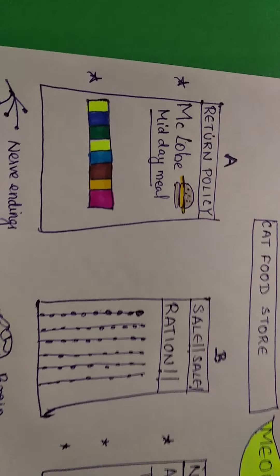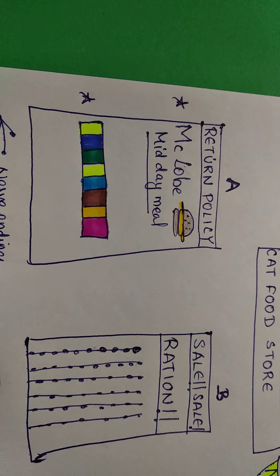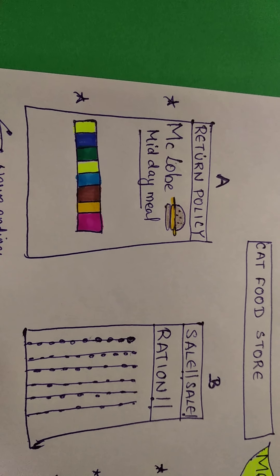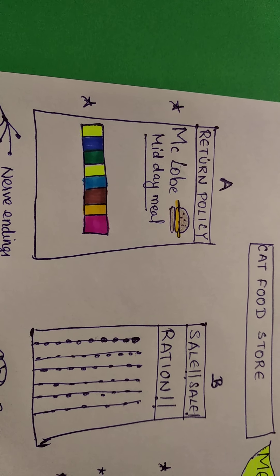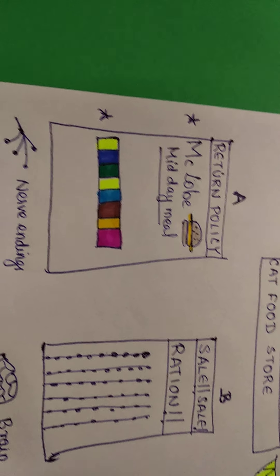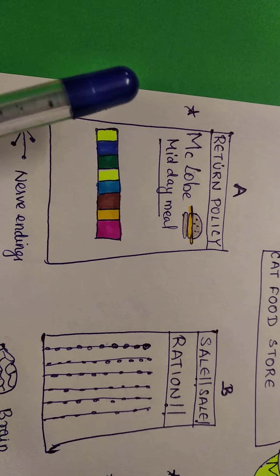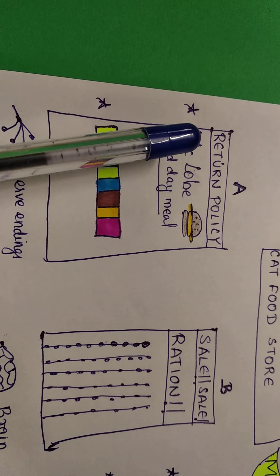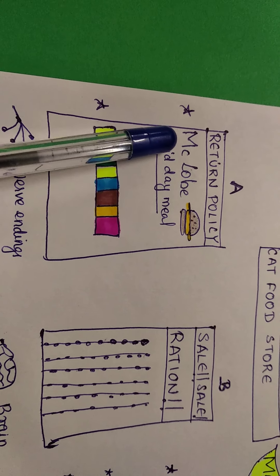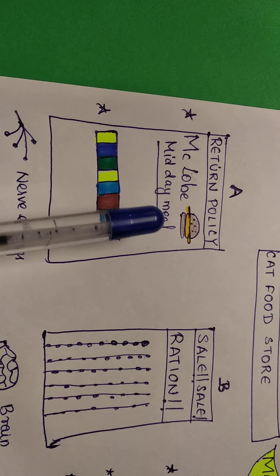First, we will see Section A. Section A, the return policy that you get cat food is inspired by McDonald's. Instead of McDonald's or Happy Meal, Midday Meal. So McDonald's, Burgers, Moclobemide, Midday Meal.